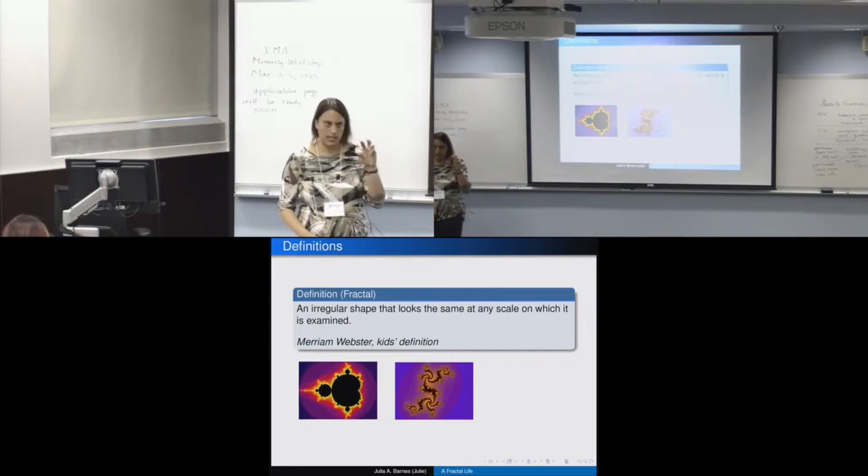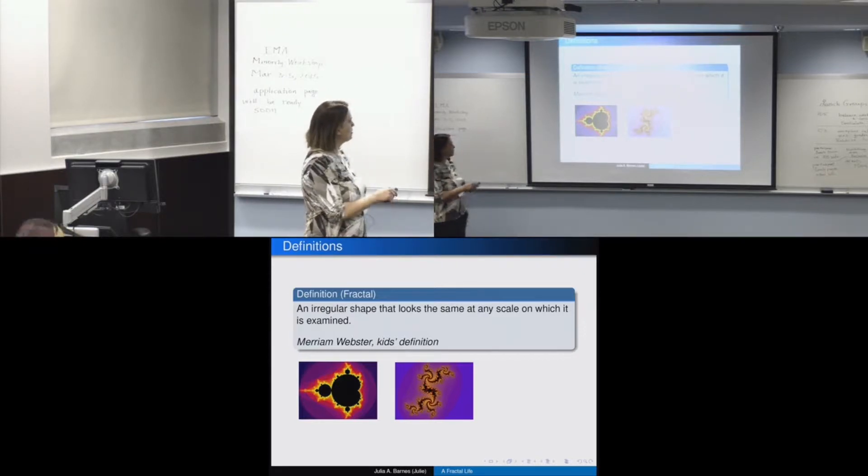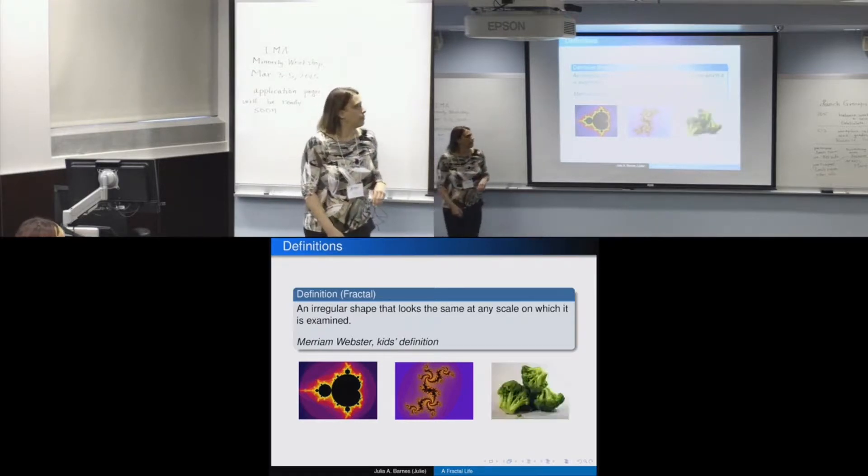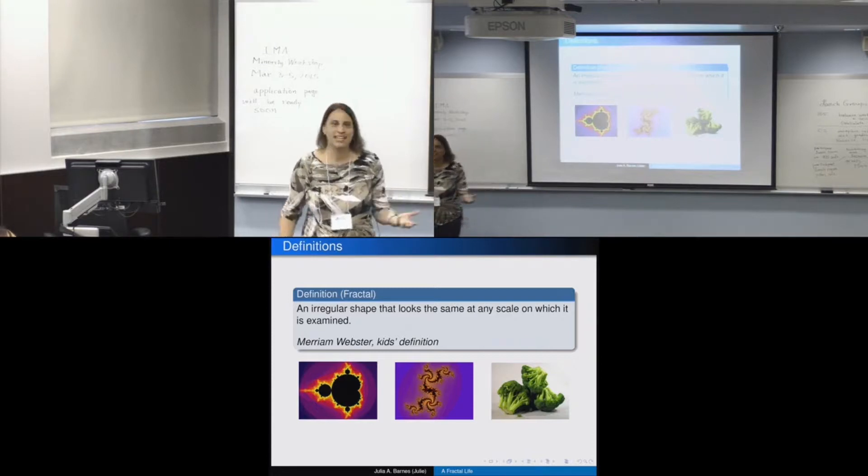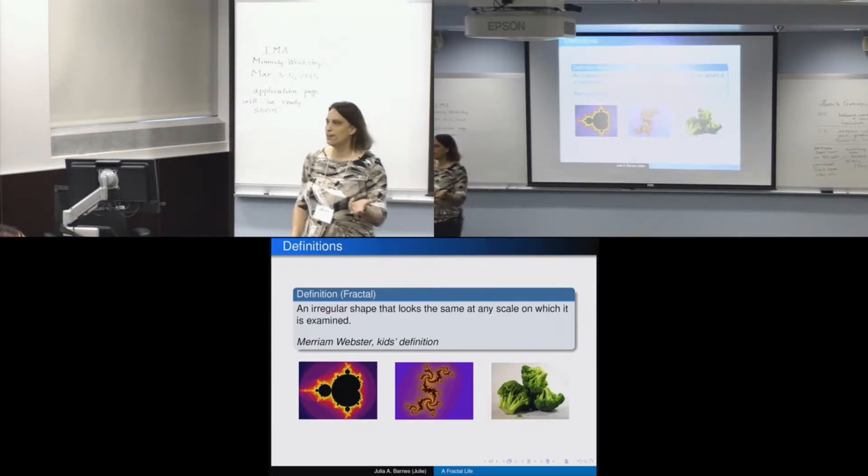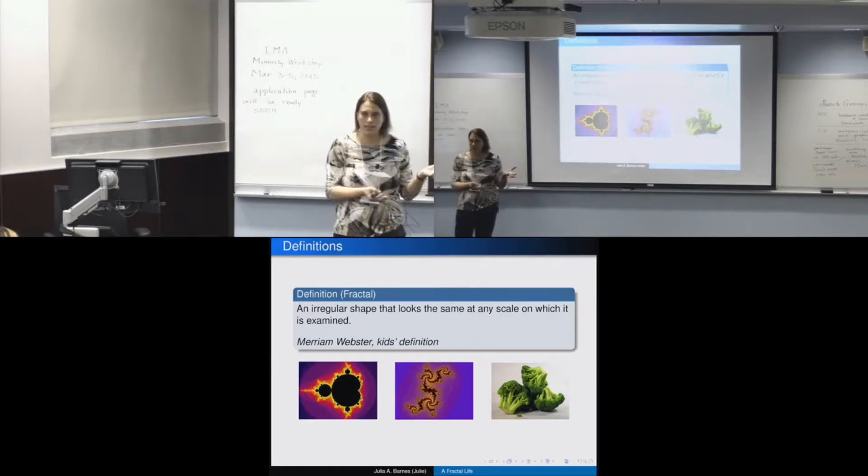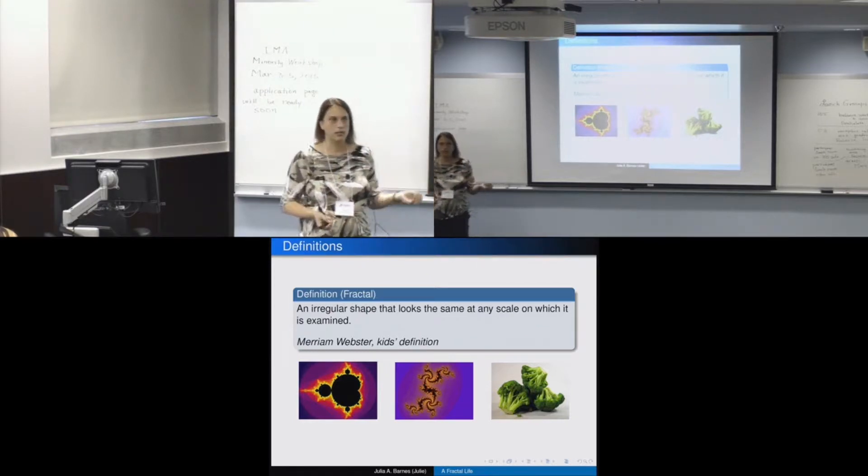And they're really cool if you start zooming in. You even get little baby Mandelbrot sets. This right here looks like a Mandelbrot set if you zoom in closer. But I'm also going to be more general, because broccoli is self-similar. If you look at that picture, you don't know if it's three big heads of broccoli or three little pieces of broccoli because they're self-similar.